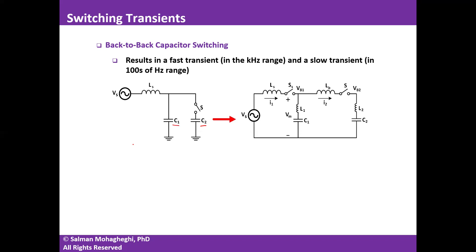Let's assume I'm closing this switch at the zero crossing of the current. Zero crossing means the current flowing through the inductor is zero. So I can assume that the portion of the circuit on the left-hand side is irrelevant — there is no current flowing through it, hence it is as if it is not connected to the rest of the system. Because we're analyzing fast transients, we can make that simplifying assumption.